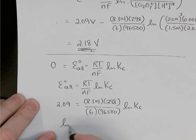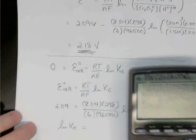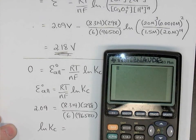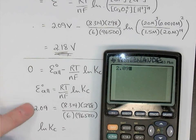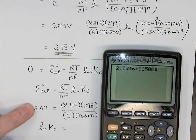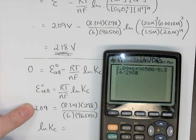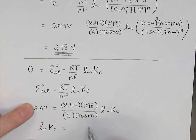So if we rearrange that, we can find ln Kc. I'll grab a calculator and do that. So ln Kc is going to be 2.09 volts multiplied by 6, multiplied again by 96,500, divided by 8.314, and divided again by 298. Equals 488.